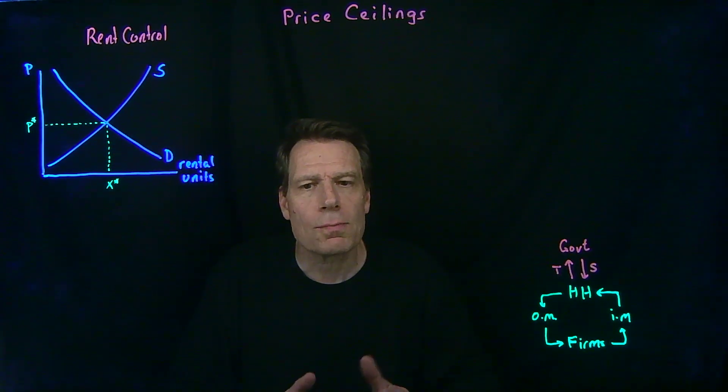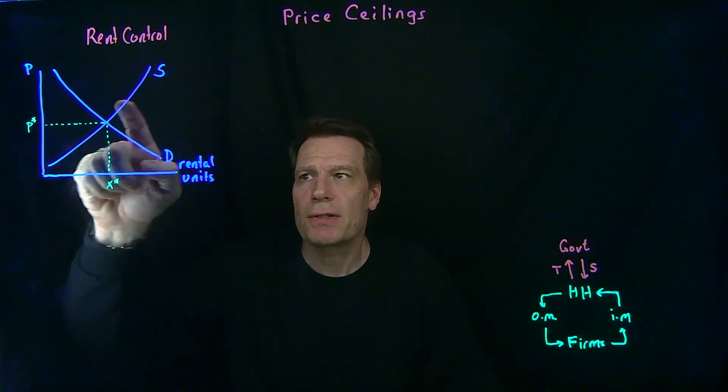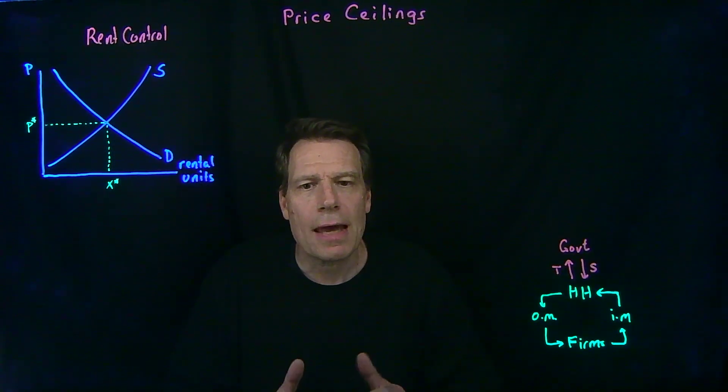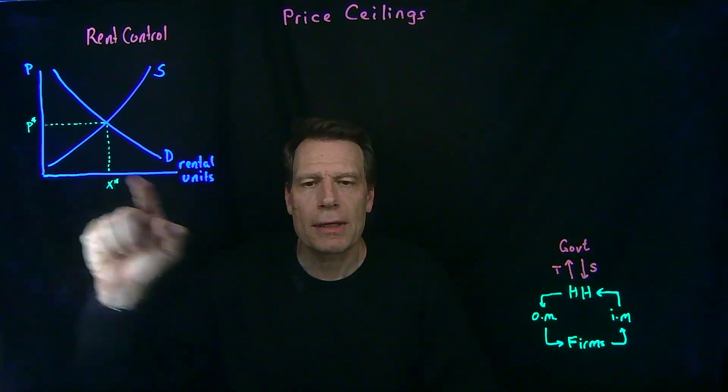Because the market doesn't want a price above that ceiling, and saying it can't price above a ceiling that the market doesn't actually want to reach doesn't have any impact. So the only way that a price ceiling or rent control has any impact in the real world is if it's set below the equilibrium price.